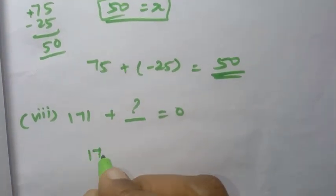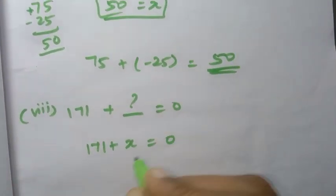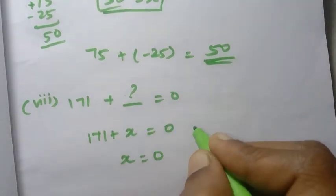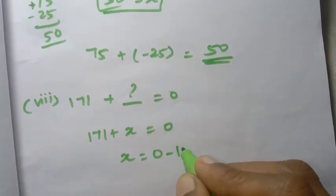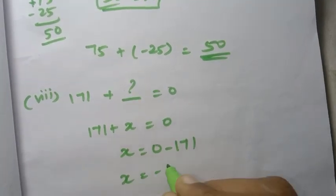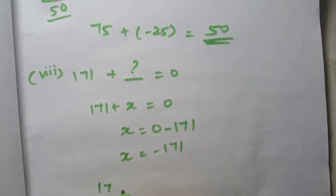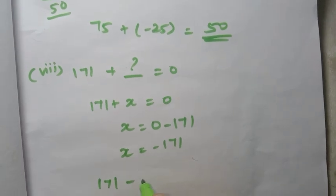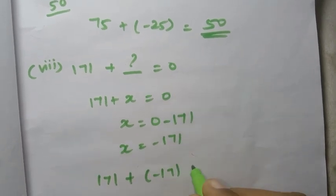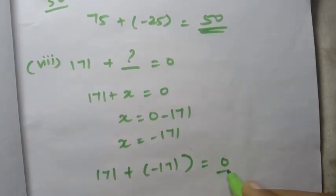So 171 plus x equals 0. Therefore x equals 0 minus 171, so x equals minus 171. Check: plus of minus 171 — the answer value is 0.